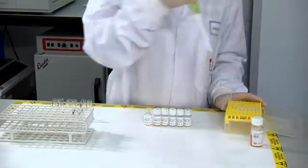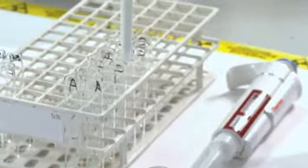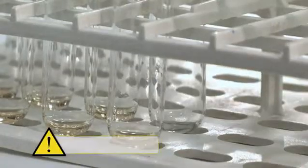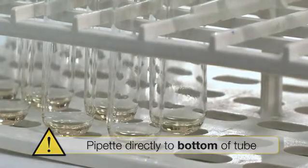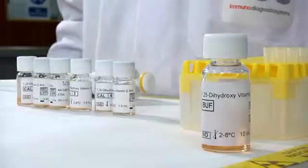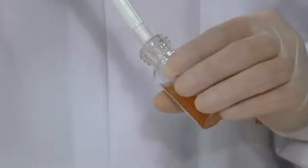Pipette 100 microliters of each calibrator into the relevant duplicate tubes. Ensure calibrators are pipetted to the bottom of the tubes and not down the sides. Add 300 microliters of assay buffer to each NSP tube.